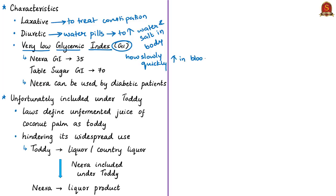Glycemic index denotes how slowly or quickly certain foods lead to an increase in blood glucose levels. Blood glucose levels above normal are toxic and can lead to blindness, kidney failure or increased cardiovascular risk. Foods low on the glycemic index scale release glucose slowly and steadily — that is why people with diabetes are advised to take low GI foods. Neera has a GI of 35, making it suitable even for diabetic patients.